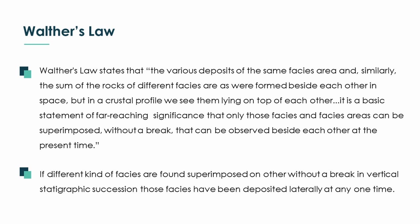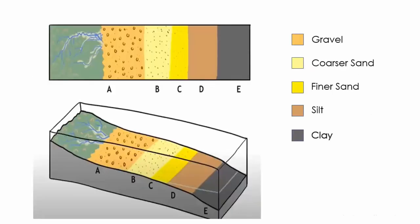Walter's Law is very important to understand facies sequences. In a simplified way, we can state that if different kinds of facies are found superimposed on one another without a break in vertical succession, these facies were deposited laterally adjacent to one another at one time in the stratigraphic sequence.